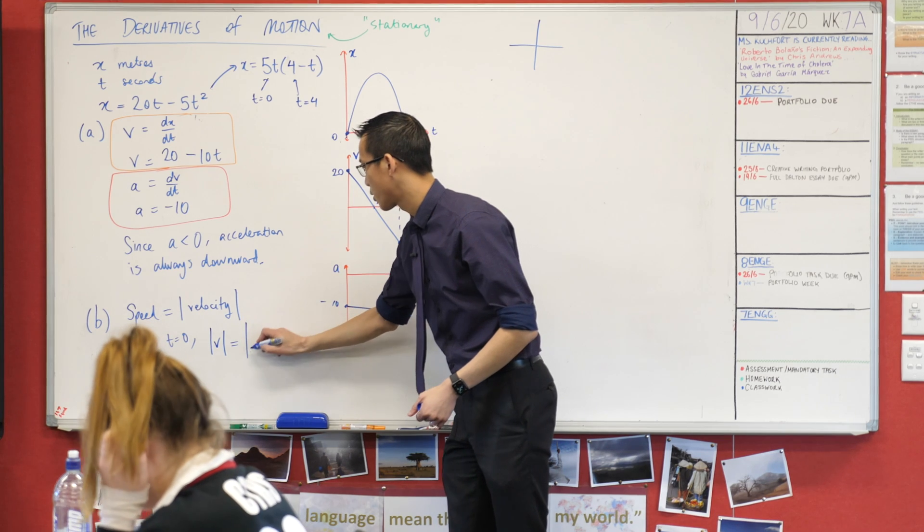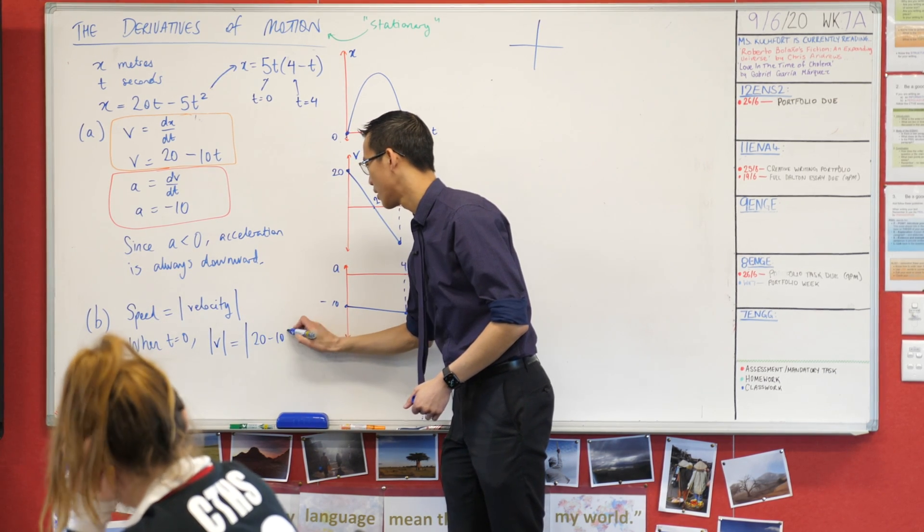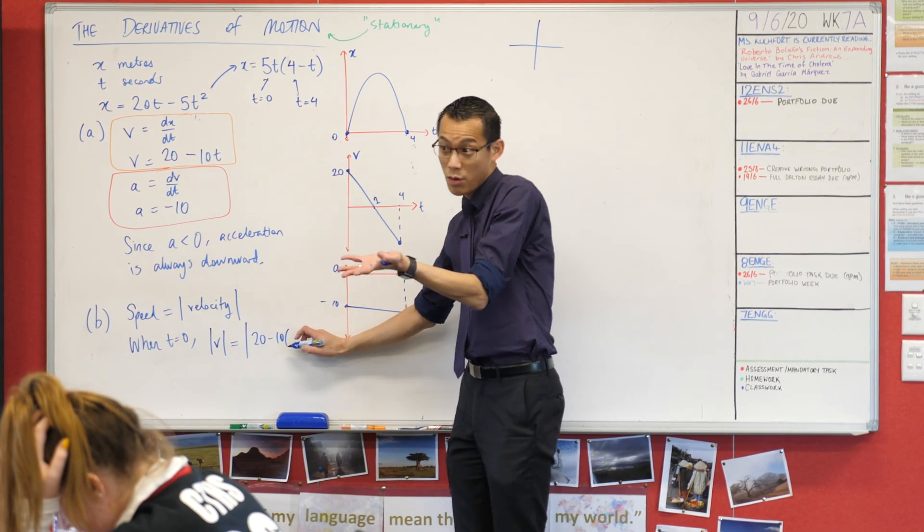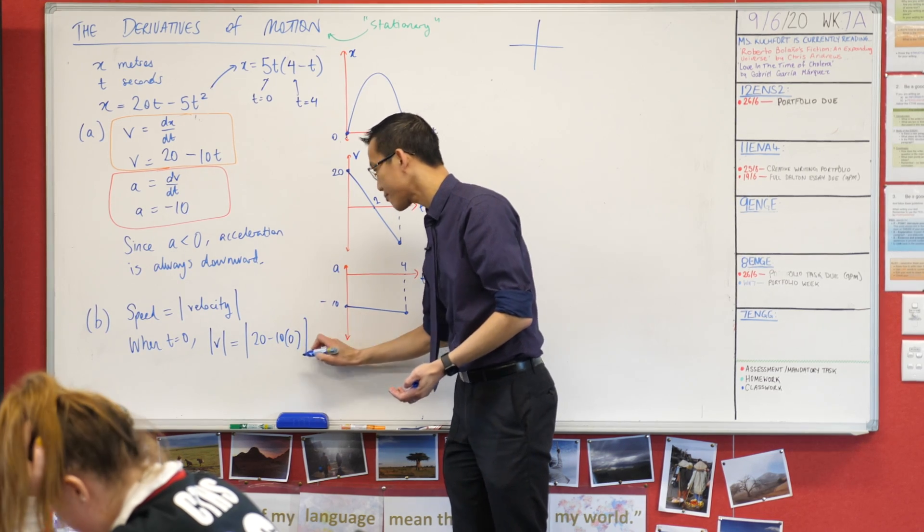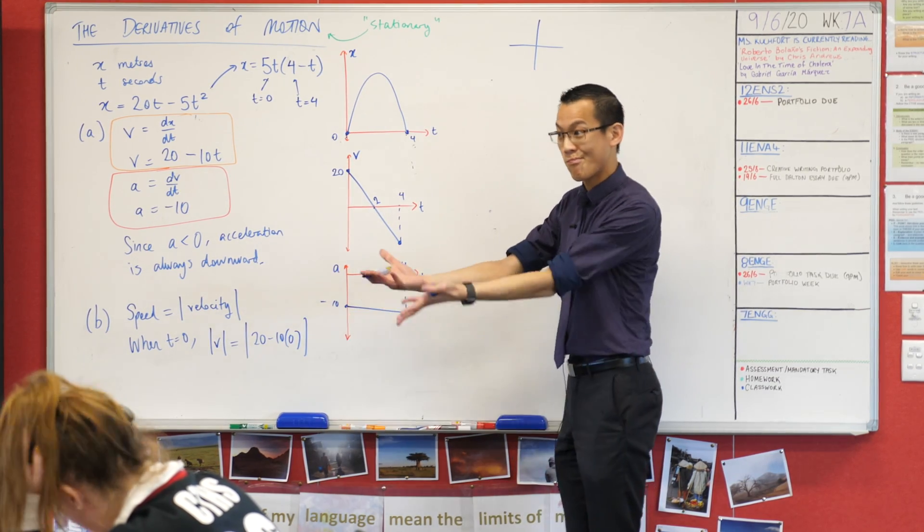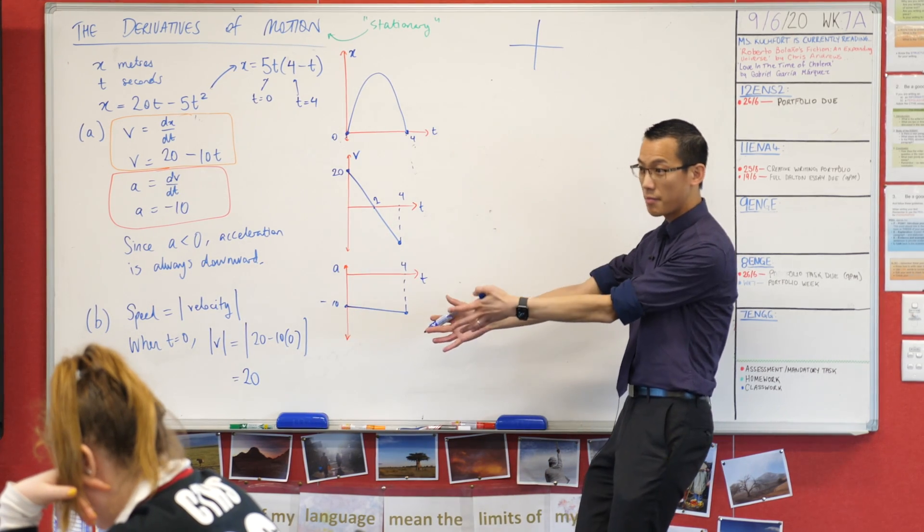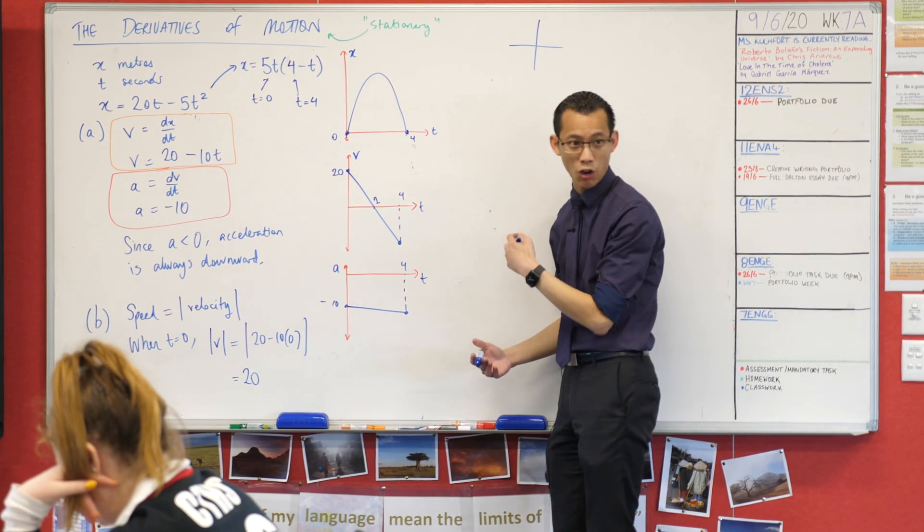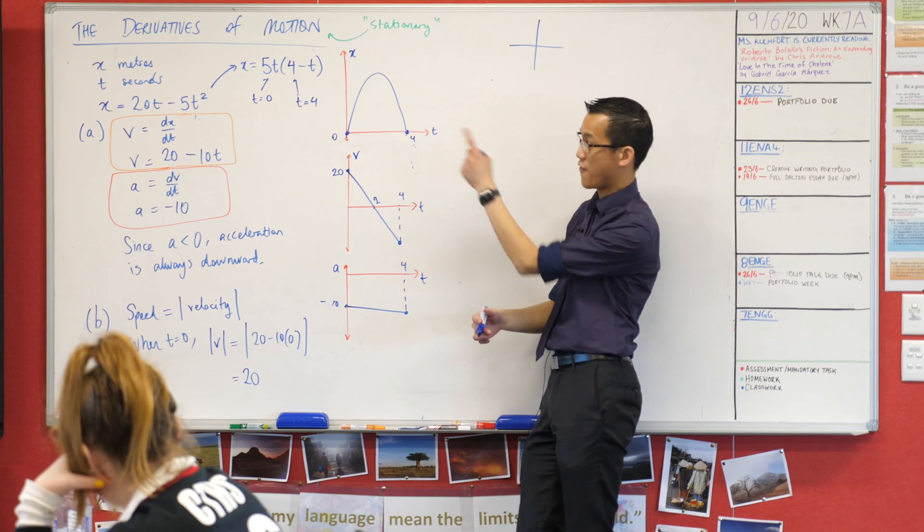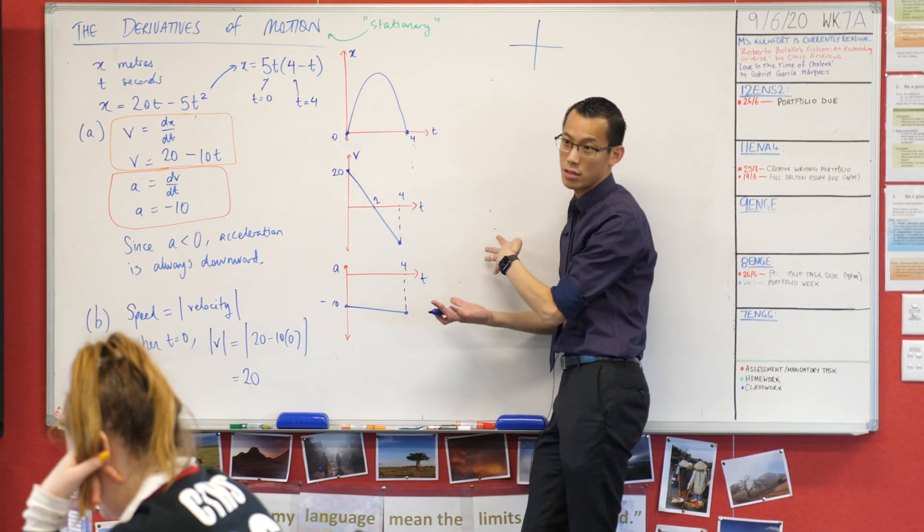So what's my velocity equation? 20 take away 10 lots of what? Zero. That's the thing I'm substituting. So it's 20 take away zero which is 20. Now that's the number but when you have a look it says tell me what the speed was so that's why the very first thing we wrote down were the units that applied.